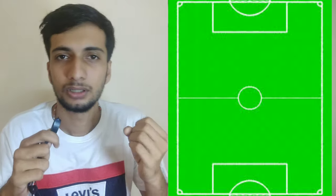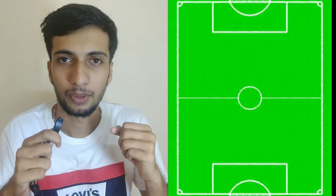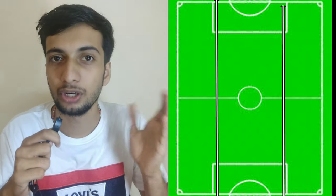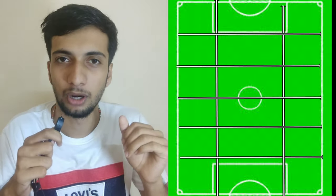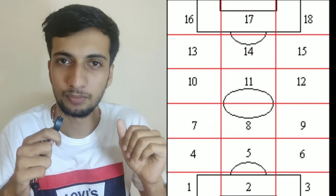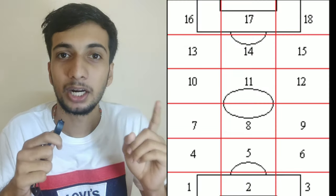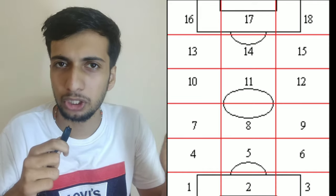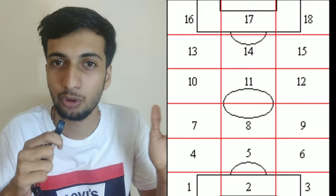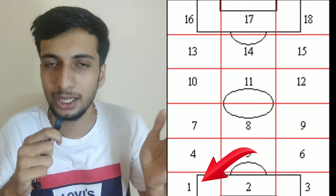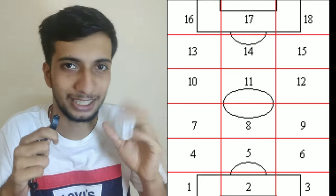What is Zone 14? That's why I am a fan of the football pitch. We have a football pitch — it's not a vertical line, it's not a horizontal line. There are 16 things — these are the 16 zones. On the left bottom side, we have Zone 1, then Zone 2, Zone 3, and so on, up to Zone 18.